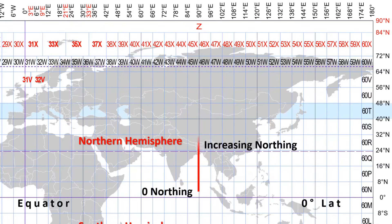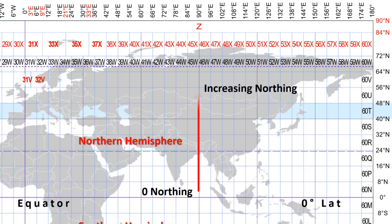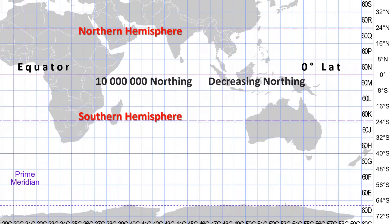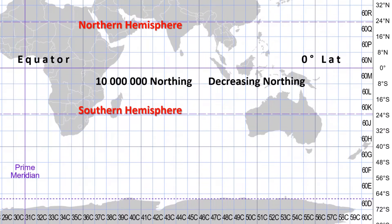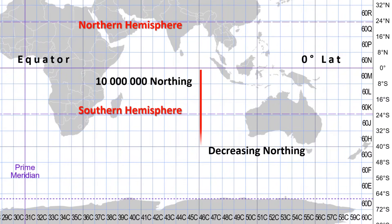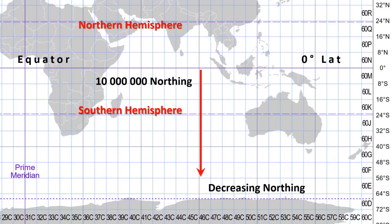You might ask, where is the zero value? If you are in the Northern Hemisphere, the Northing value of zero starts from the equator. And if you are in the Southern Hemisphere, the Northing value of the equator is 10 million.